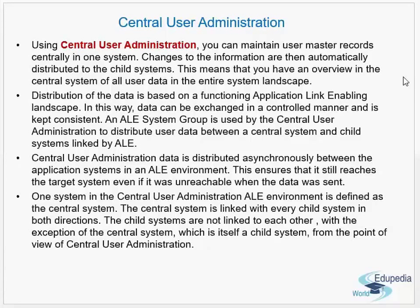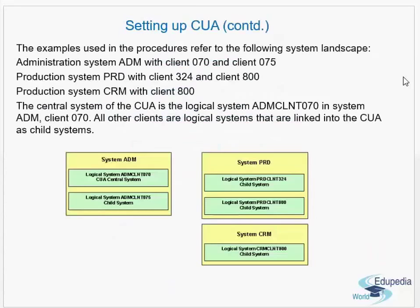Generally, the production system is not chosen as the CUA. Development systems generally work as CUA because roles have to be developed, tested, and then only transported to production. So development and everything is done in the development system, which is chosen as the CUA.